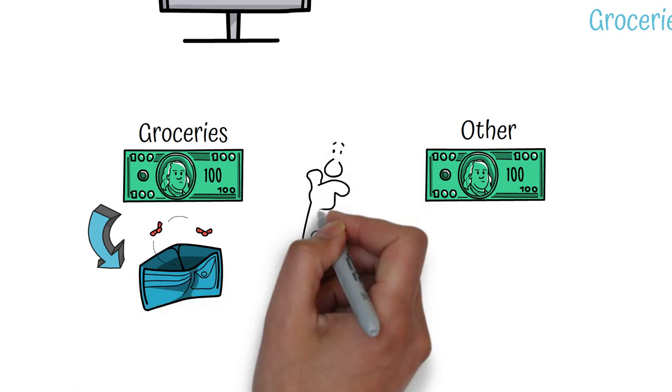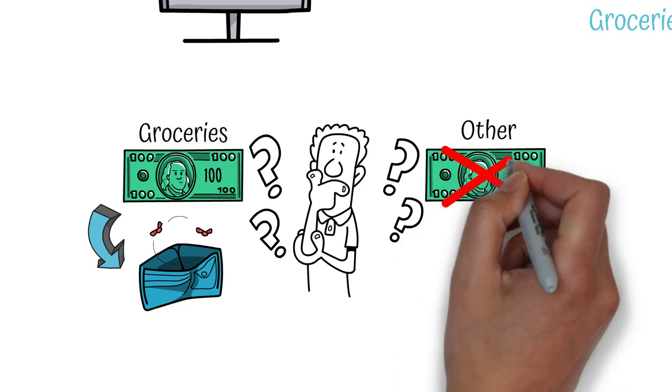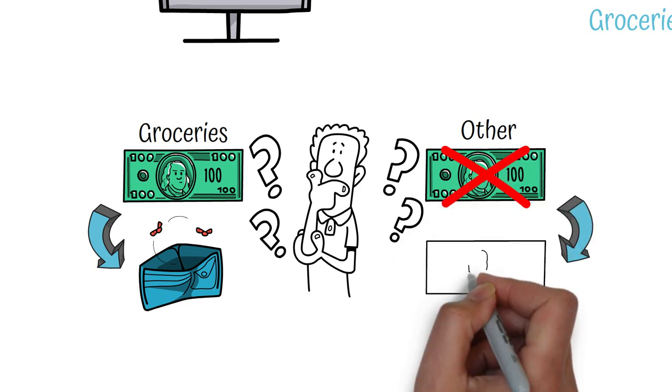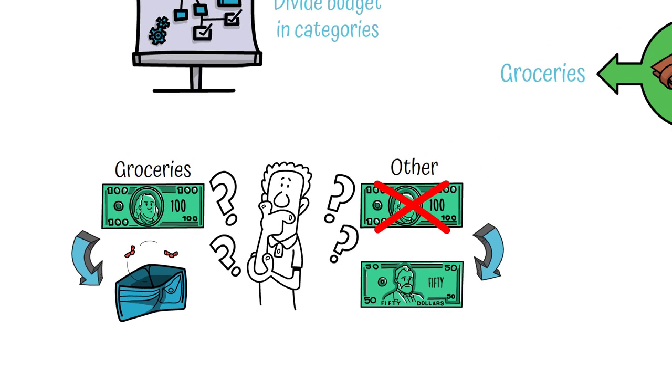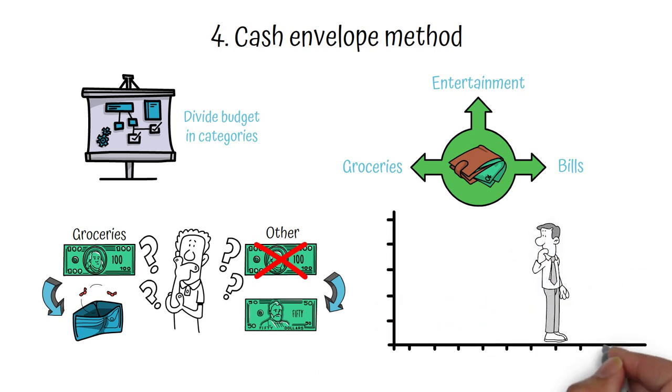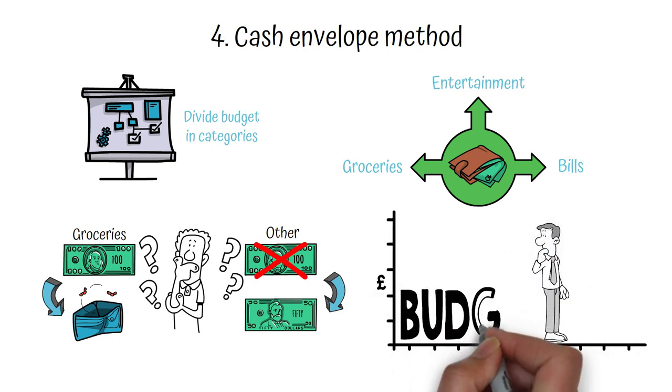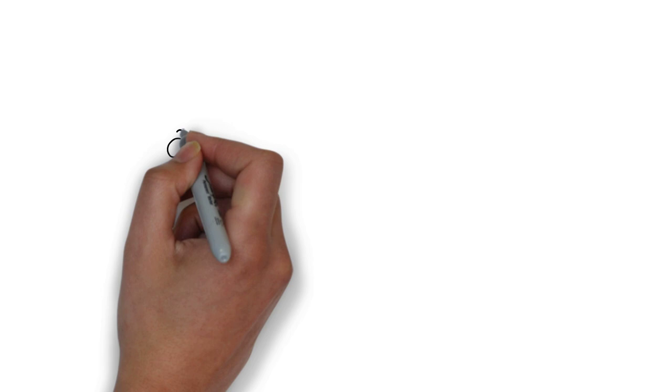If you run out of cash before the end of the month, that means you have exceeded your budget for that category and will need to cut back on spending or use money from another category to make up the difference. The Cash Envelope Method can be a very useful tool for people who have trouble sticking to a budget or who tend to overspend using credit or debit cards. By using cash instead of electronic payment methods, it can create a sense of accountability and help you stay on track with your spending goals.